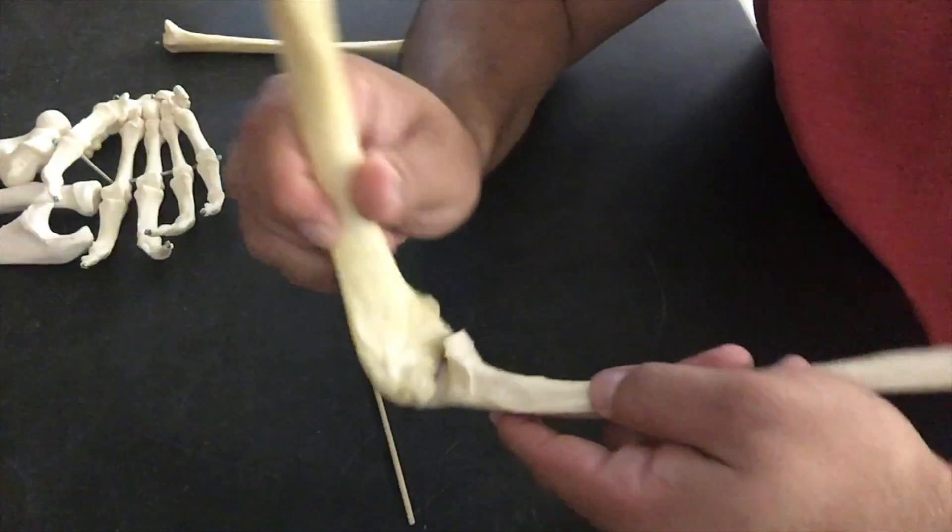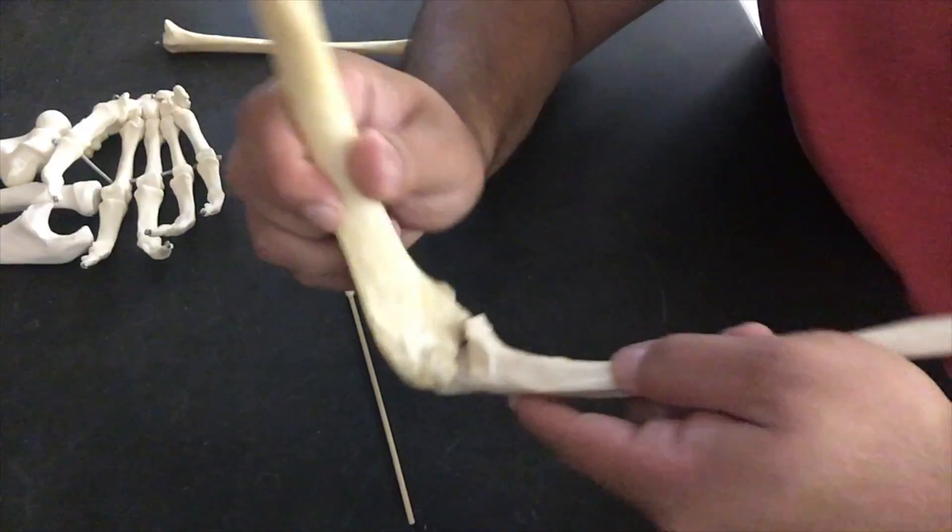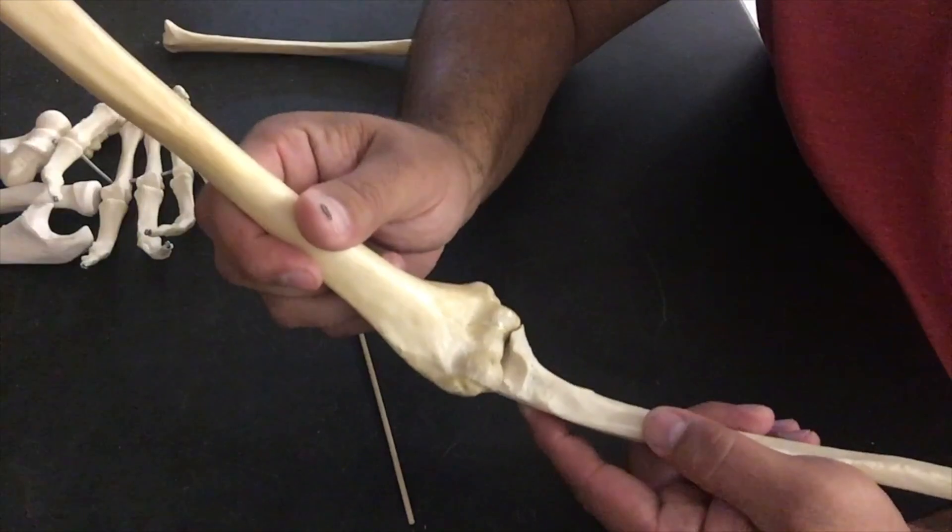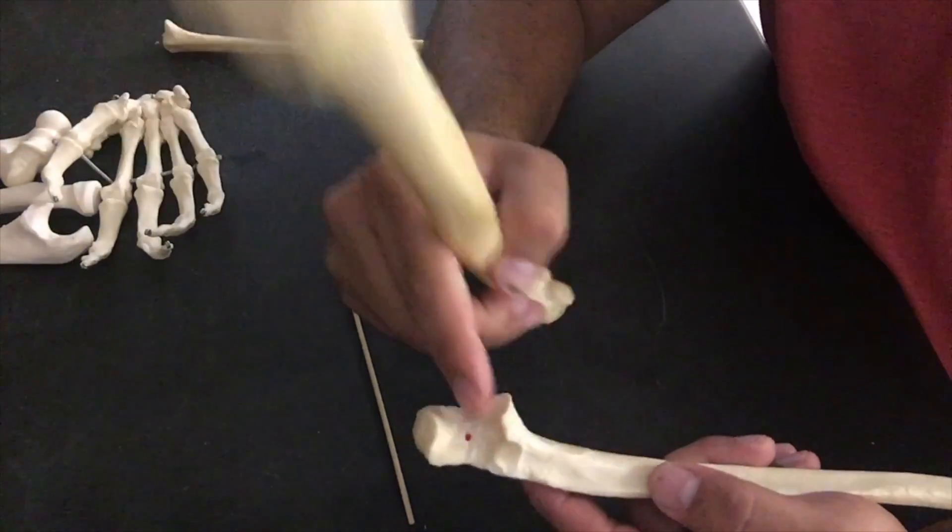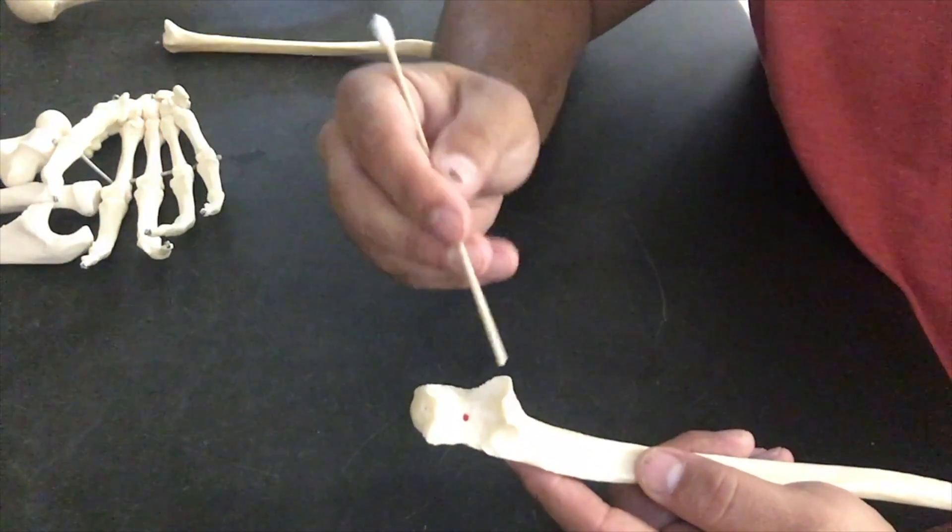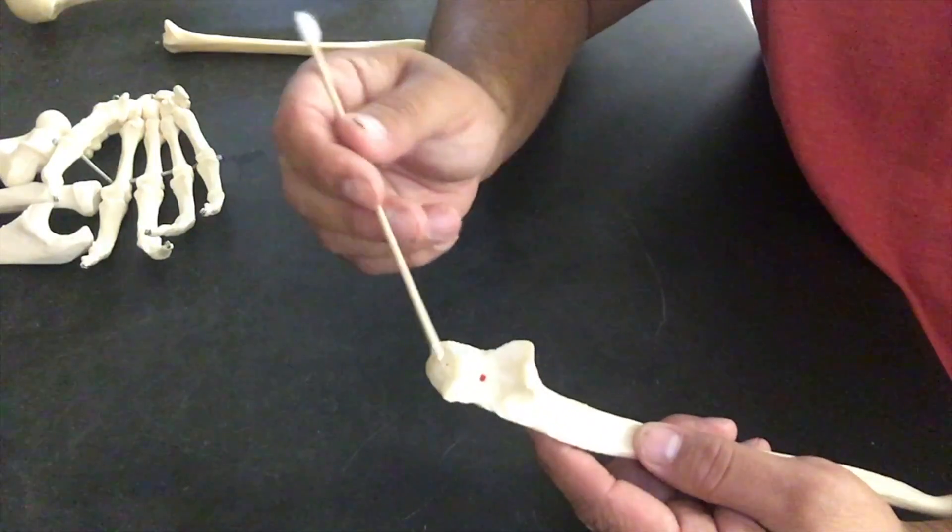That trochlear notch is going to grab right onto that condyle. It gives you this diarthrotic hinge, that flexion and extension that you can get with your forearm. This is a really good bony fit—a nice, good plier-like grip on that trochlea.